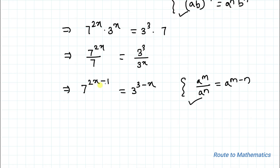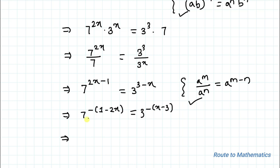For conversion we need to take out common minus 1. So we can write 7 to the power minus of (1 minus 2x) equals 3 to the power minus of (x minus 3). In order to convert this negative power to positive power we need to do the reciprocal. So we have 1 by 7 to the power (1 minus 2x) equals 1 by 3 to the power (x minus 3).